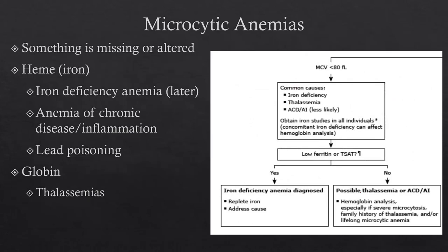Let's first talk about the microcytic anemias. A microcytic anemia is when you have fewer RBCs, and the RBCs you do have are smaller than they should be. The best way to think about it is they're smaller because something in the RBC is either missing or changed so that it's smaller. So: missing or changed so that it's smaller.